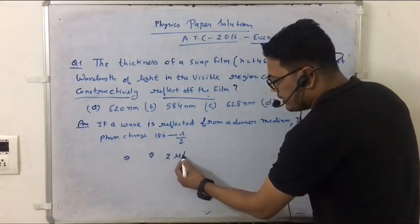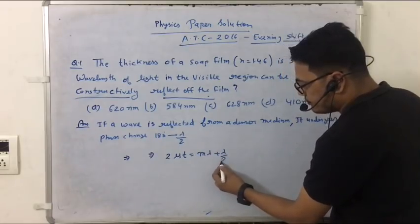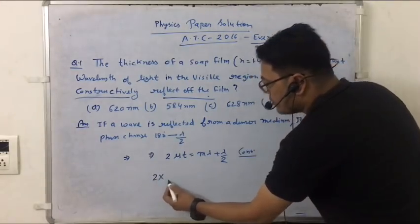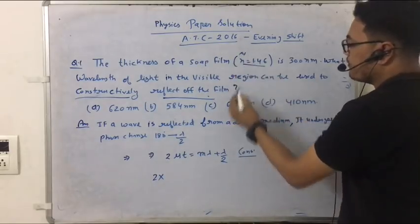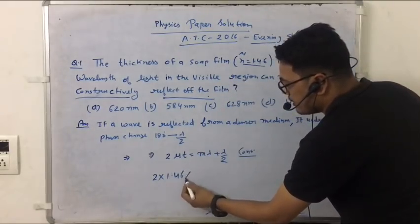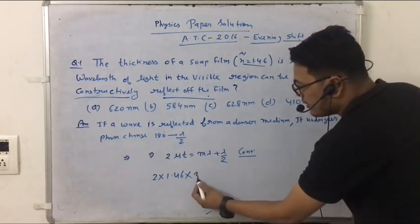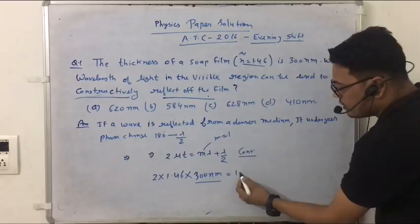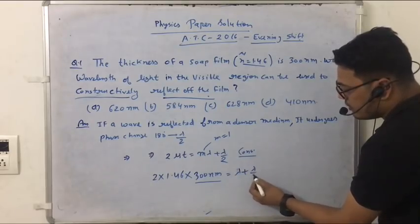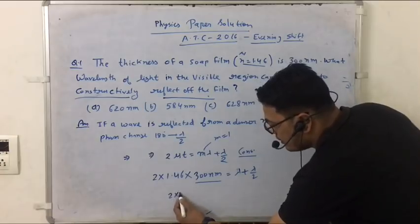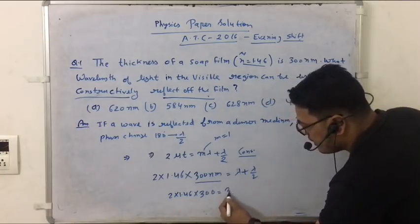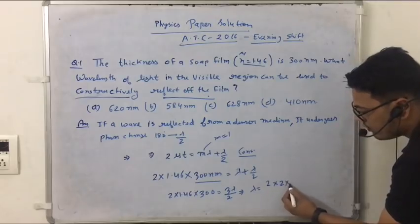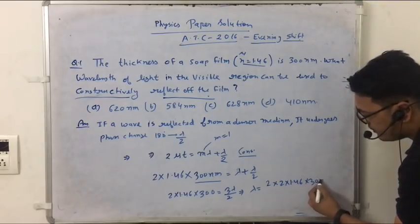It's 2 mu t equal to m lambda plus lambda by 2. Now, 2 mu, how much is mu? Mu is the refractive index. So this is 1.46. How much is t? It's 300 nm. 2 times 1.46 into 300 equal to 3 lambda by 2. 2 multiply 2 into 1.46 into 300 upon 3, and after multiplying all this we will get 584 nanometer. Okay.